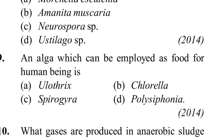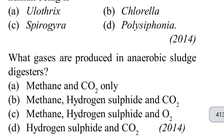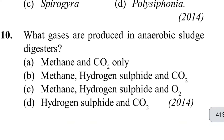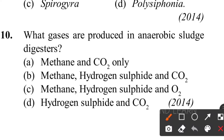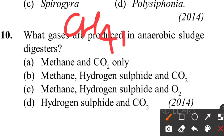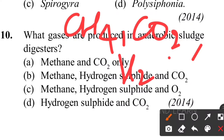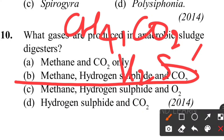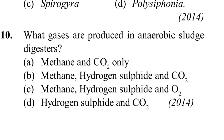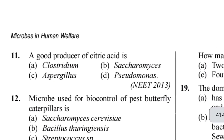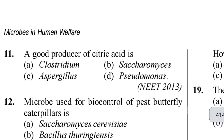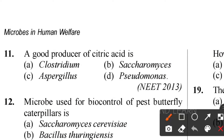Tenth question: what gases are produced in an anaerobic sludge digester? In the anaerobic sludge digester, the gases produced are CH4 (methane), CO2 (carbon dioxide), and H2S (hydrogen sulfide). These three are produced, so option B is the correct answer.